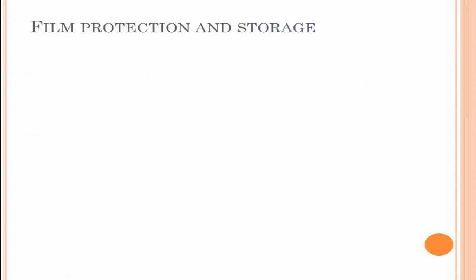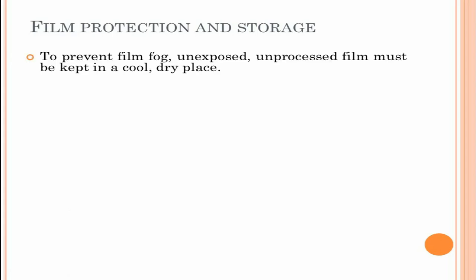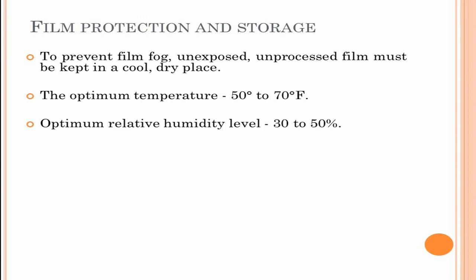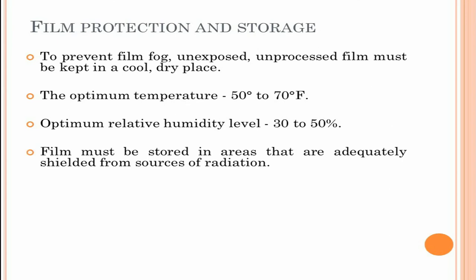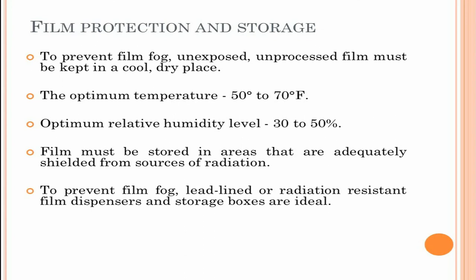Next is film protection and storage. To prevent film fog, unexposed unprocessed film must be kept in a cool, dry place. Film is adversely affected by heat, humidity and radiation. Optimum temperature for film storage is 50 to 70°F and optimum relative humidity level is 30 to 50%. Films must be stored in areas adequately shielded from radiation sources and should not be stored where patients are exposed to radiation. Lead-lined or radiation-resistant film dispensers and storage boxes are ideal. All dental x-ray film has a limited shelf life. Each box is clearly labeled with an expiration date. The first in, first out rule should be applied to film use. The oldest film in stock should always be used before any new film.